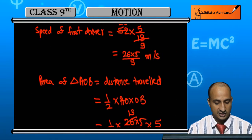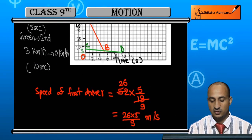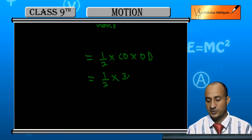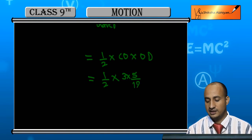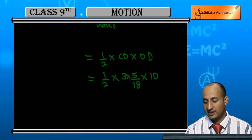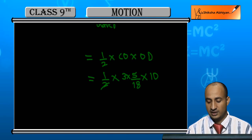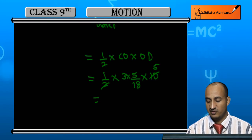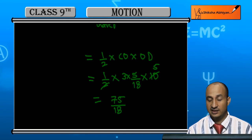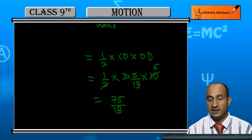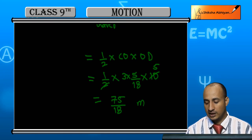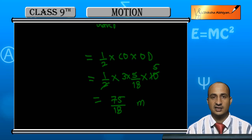CO here is 3 km per hour, which converts to 3 times 5 by 18 meters per second. OD is 10 seconds. So the area equals half times 3 times 5 by 18 times 10, which gives 75 by 18, simplifying to approximately 8 meters. So the second driver travels about 8 meters after the brakes are applied.